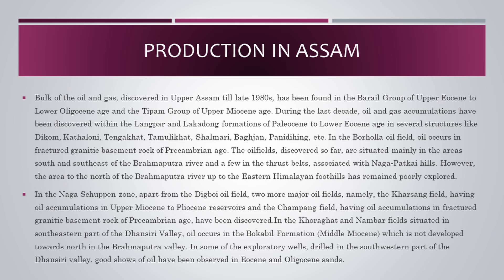In the Bohua oil field, oil occurs in fractured granitic basement rock of Precambrian age. The oil fields discovered so far are situated mainly in areas south and southeast of the Brahmaputra River, with a few in the thrust belts associated with Naga-Patkai Hills. The area to the north of the Brahmaputra River up to the eastern Himalayan foothills has remained poorly explored. In the Naga-Shapan zone, apart from the Digboy oil field, two more major oil fields have been discovered: the Kharsan field, having oil accumulations in Upper Miocene to Pliocene reservoirs, and the Champang field, having oil accumulations in fractured granitic basement rock of Precambrian age. In the Khoraghat and Nambar fields of the Dhanseeri Valley, oil occurs in the Bokabil formation (Middle Miocene). In some exploratory wells drilled in the southwestern part of the Dhanseeri Valley, good shows of oil have been observed in Eocene and Oligocene sands.